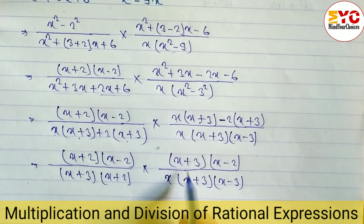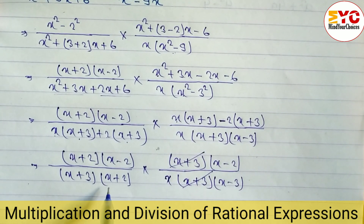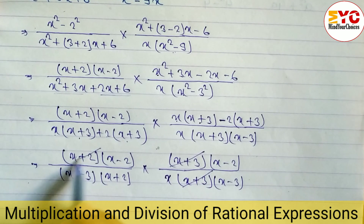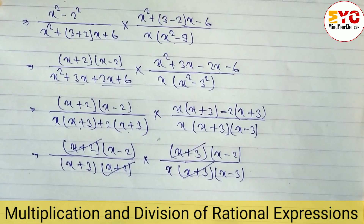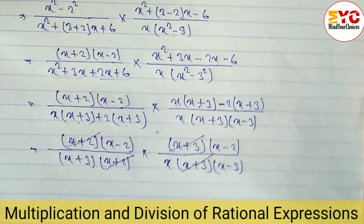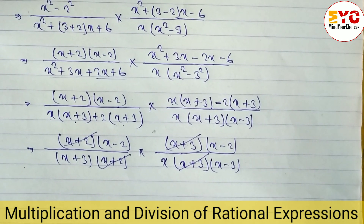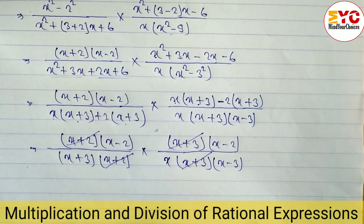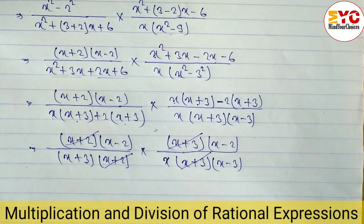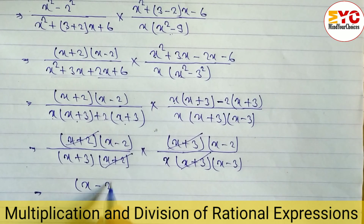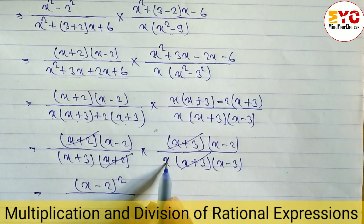Now we have to reduce. You can see here (x plus 3)(x plus 3), so we can cancel these two. After this you can see (x plus 2)(x plus 2), so we can cancel these also. Now in the numerator what is remaining: (x minus 2)(x minus 2) — both are same, so we can write this as (x minus 2) whole squared. In the denominator what is remaining is a single x variable.